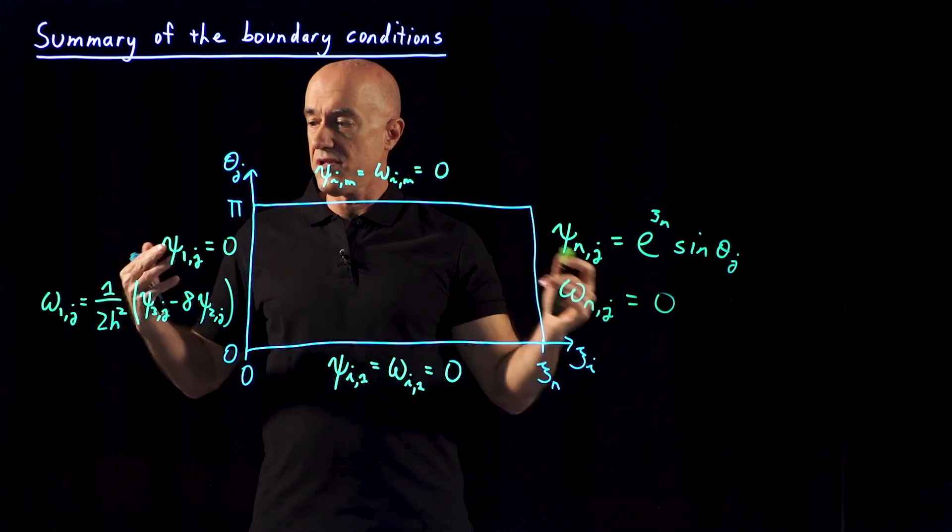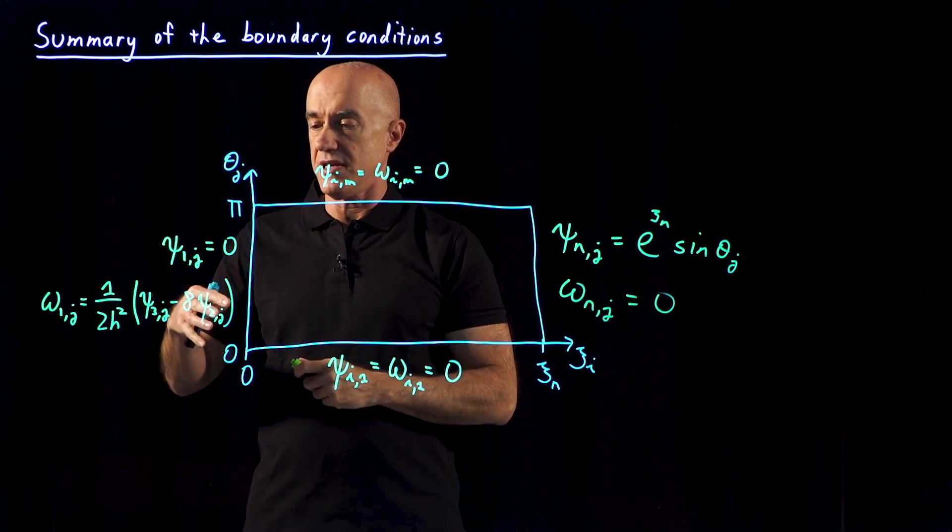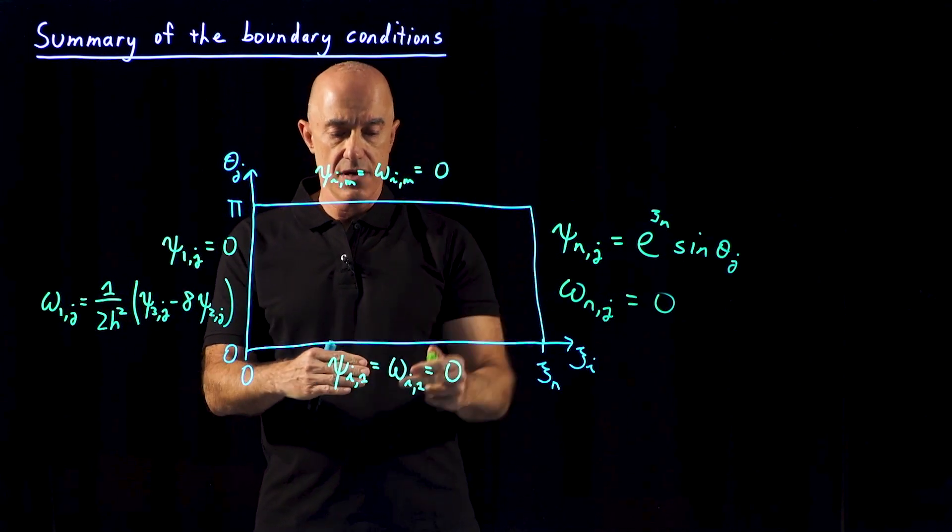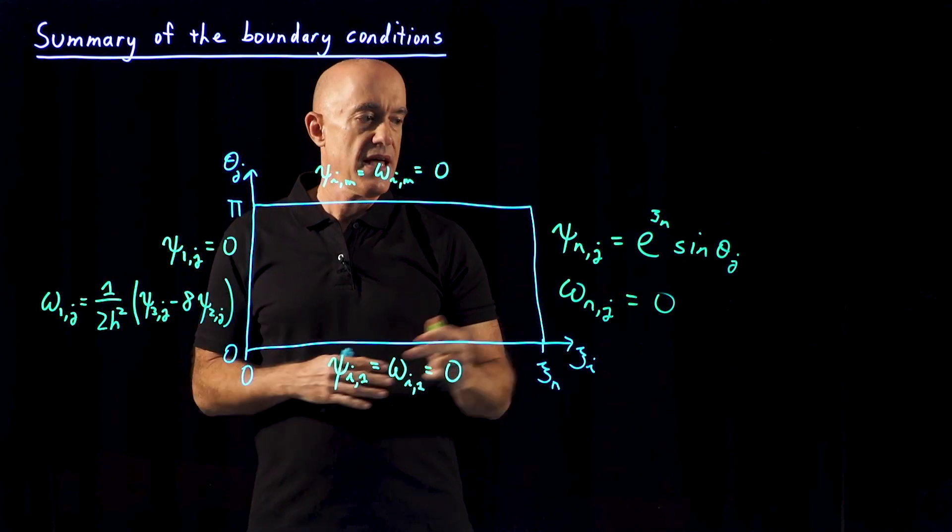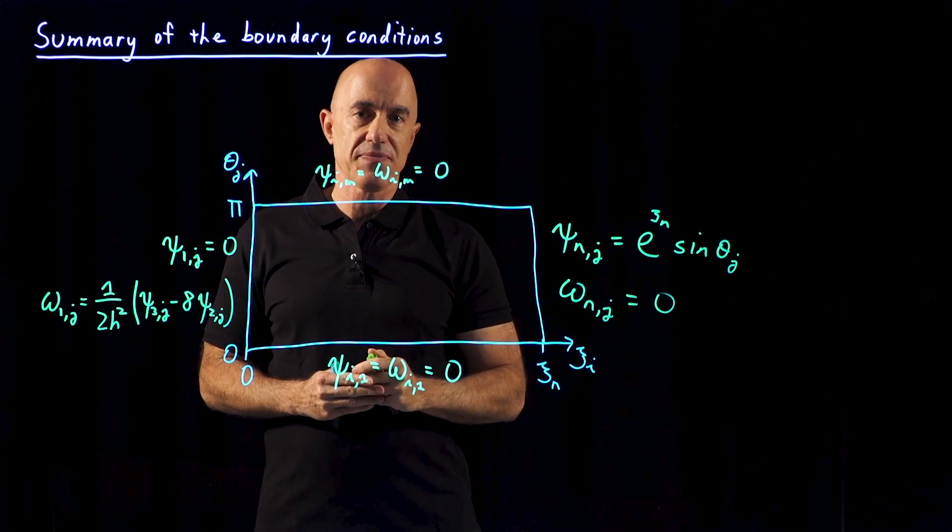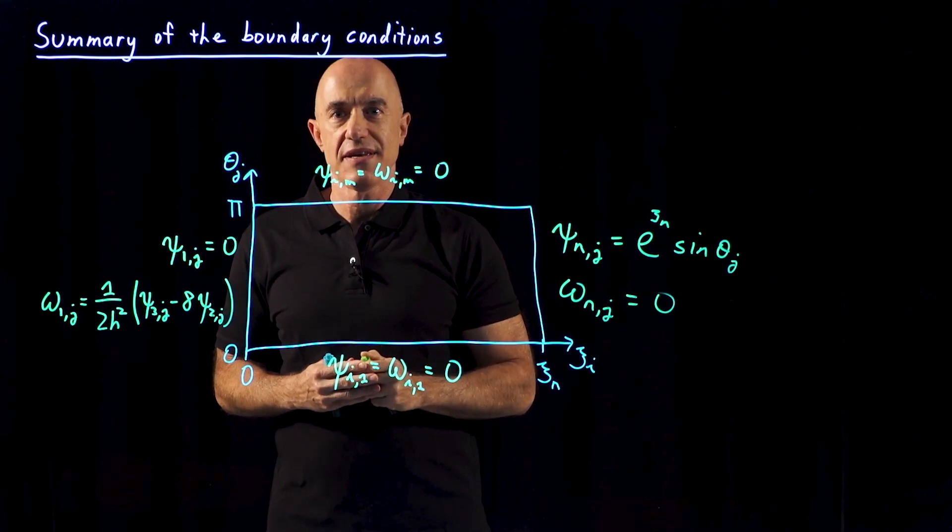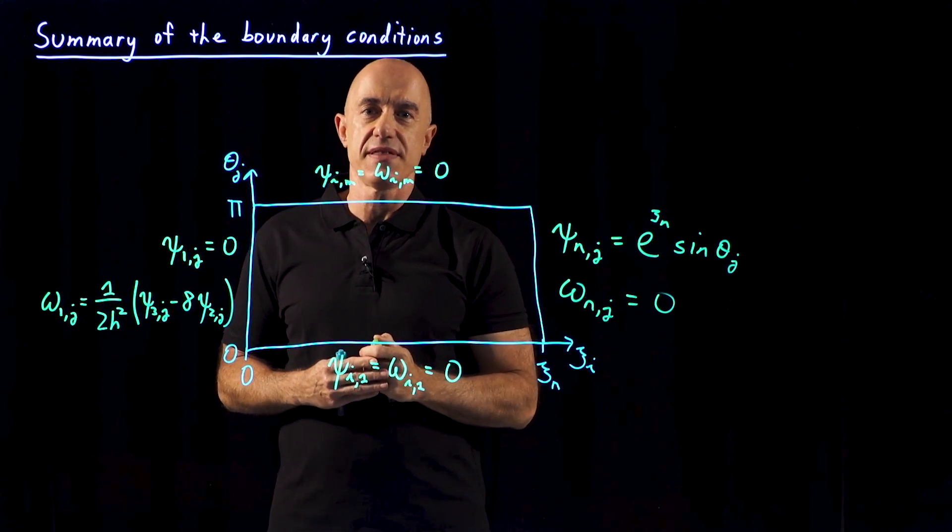Okay, so these are all of the boundary conditions. We have a boundary condition on the stream function and the vorticity on the midline of the flow, right behind the flow, in front of the flow, and on the cylinder and in the free stream. This is what you need to implement in your code. I'm Jeff Chasnov. Thanks for watching and I'll see you in the next video.